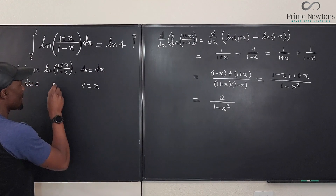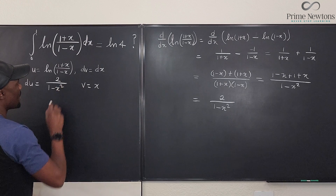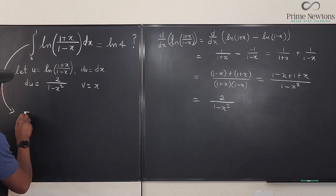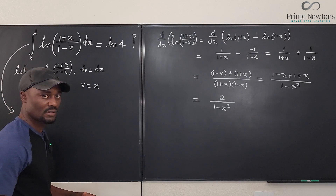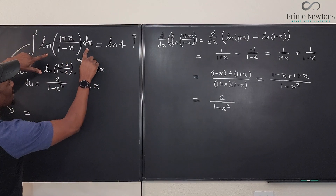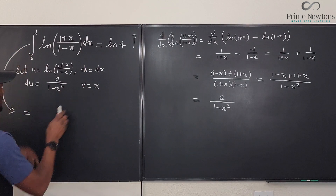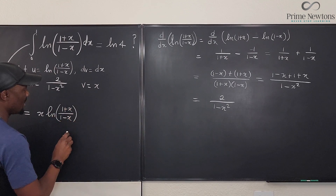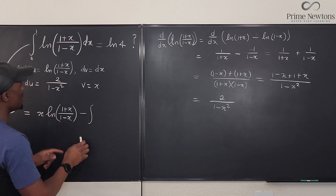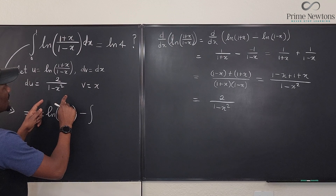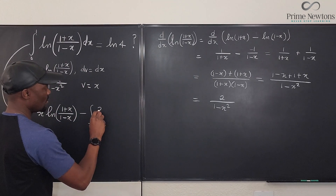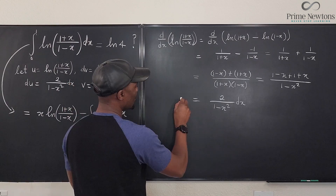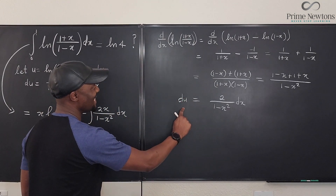Now we write our answer using integration by parts. The integral equals uv minus the integral of v du. That gives us x·ln((1+x)/(1-x)) minus the integral of v·du, which is x times 2/(1-x²) dx, so we have minus the integral of 2x/(1-x²) dx.